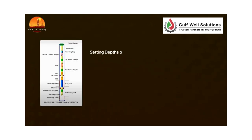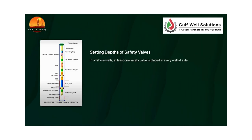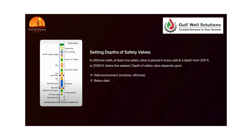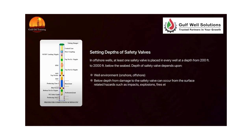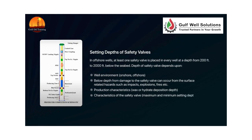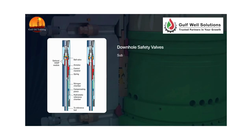In offshore wells, at least one safety valve is placed in every well at a depth from 200 feet to 2,000 feet below the seabed. The depth of the safety valve depends upon the well environment (onshore or offshore), below which damage to the safety valve can occur from surface-related hazards such as impacts, explosions, fires, production characteristics, and wax or hydrate deposition. The depth is also determined by the characteristics of the safety valve itself — its maximum and minimum setting depth.